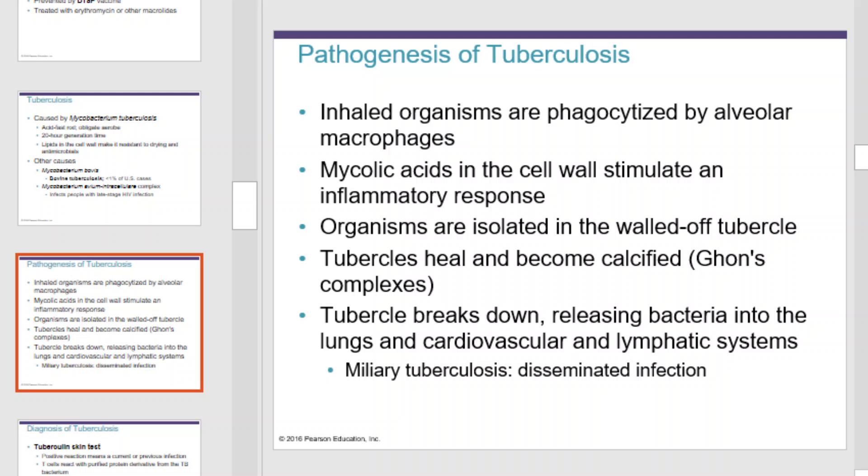Pathogenesis of tuberculosis starts as organisms are inhaled and phagocytized by alveolar macrophages. Mycolic acids in the cell wall stimulate an inflammatory response. The organisms are isolated in walled-off tubercles, and as the tubercles heal and become calcified, they are referred to as Ghon complexes. Tubercles break down, releasing bacteria into the lungs and cardiovascular and lymphatic systems.